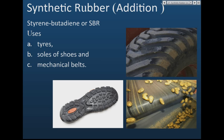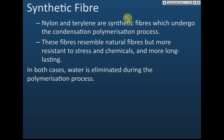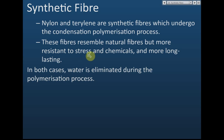Synthetic fibers come in two types: nylon and terylene. These are produced by condensation polymerization. These fibers are like natural fiber but more resistant to stress and chemicals, more long-lasting, and can withstand higher stress. In the production of both nylon and terylene, a water molecule is eliminated from the monomers to make them join together.